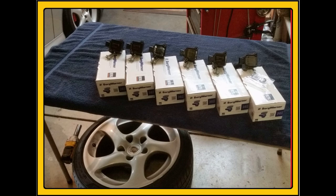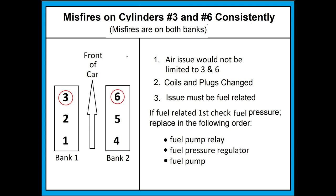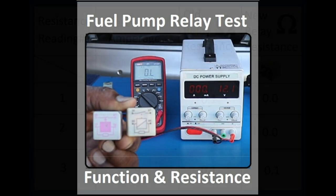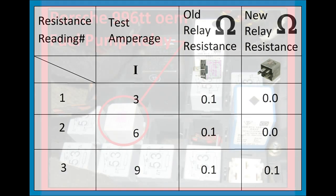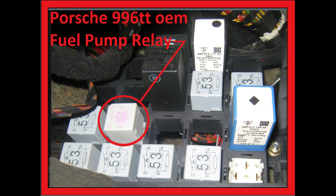The three most logical fuel-related components I came up with were the fuel pump relay, the fuel pressure regulator, and the fuel pump itself. I started with the cheapest and easiest to access: the fuel pump relay. I changed it out, cleared the codes, and drove the car. The codes didn't come back for about a week, then another week, but after four weeks the codes finally returned: three and six. I had also tested the old relay and found some resistance in it, so changing it made sense.